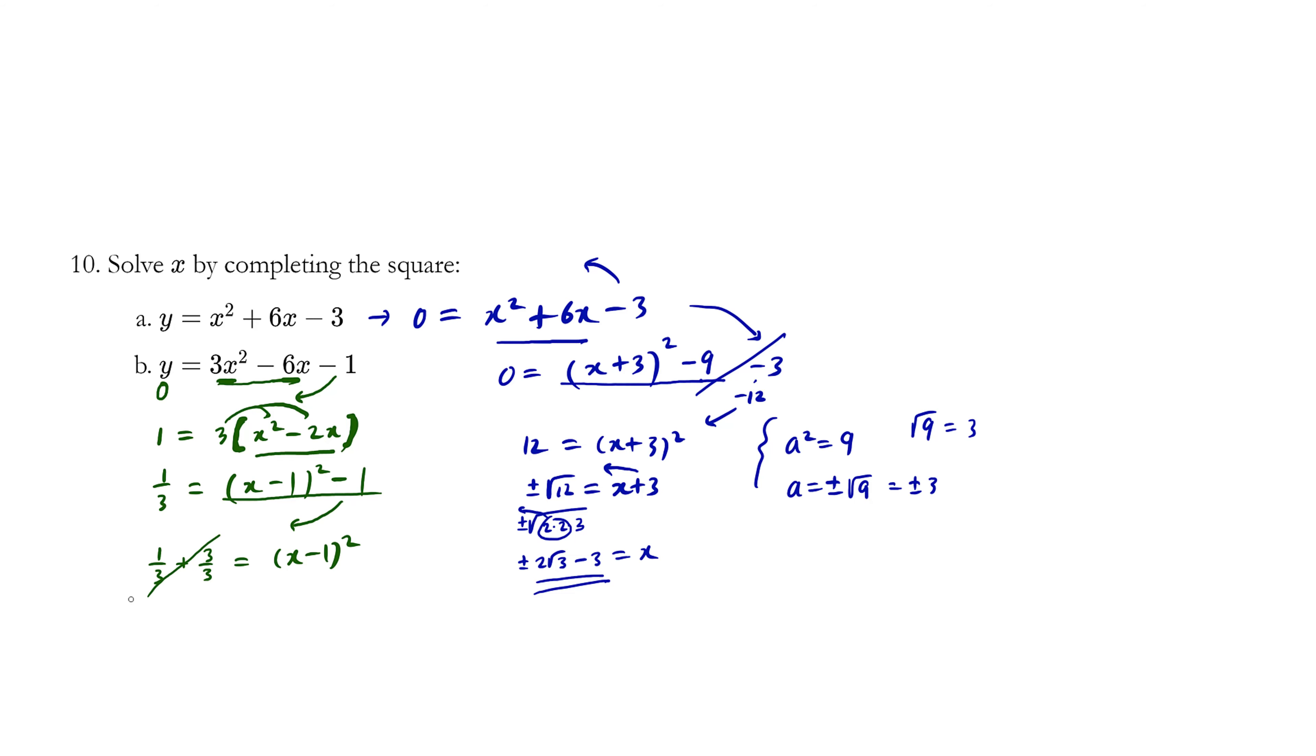And by the way, just to save a bit of writing, I'm going to rewrite this as 4 over 3. Because 1 plus 3 is 4, we're just adding fractions. So when we square root both sides, x minus 1 is equals to plus minus the square root of 4 thirds. This is looking pretty good.